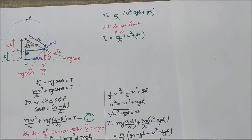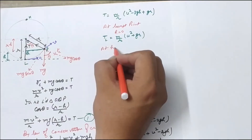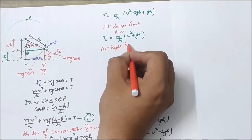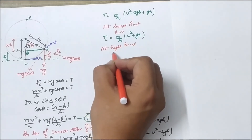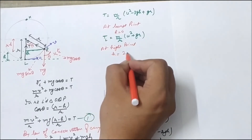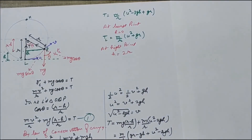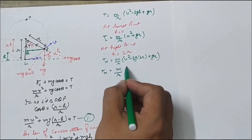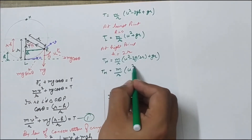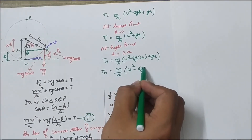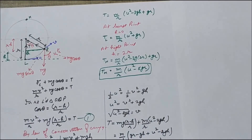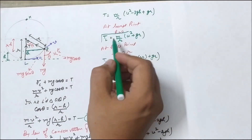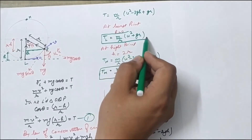Now we evaluate tension at the highest point H. If the body is at the highest point, the value of h equals 2r. Substituting h equals 2r into the tension equation, T_H comes out to be m upon r times (u² minus 5gr). This is the tension in the string at the highest point, and T_L is the tension at the lowest point.